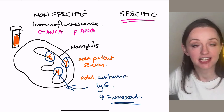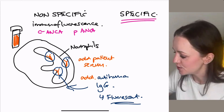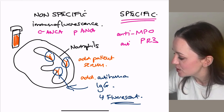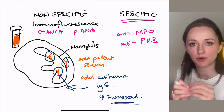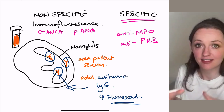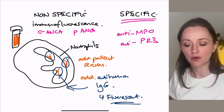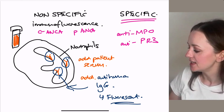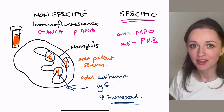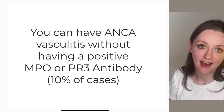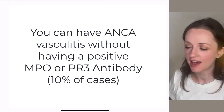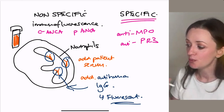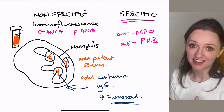We also have specific testing, and this is where your molecules come in — your MPO and PR3 antibodies. Here we're doing specific ELISA tests to pick up the specific antibody this person has in their serum. It's nothing to do with sticking things to the neutrophil; it's literally just taking their blood sample and checking what antibodies are there in their bloodstream — finding out if they have an MPO or a PR3 antibody. Another caveat: you can absolutely have ANCA vasculitis and not have any antibodies at all. It's very annoying, but it happens in about 10% of cases. However, 90% of the time you'll be able to pick up a positive ANCA in someone who has ANCA vasculitis.